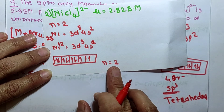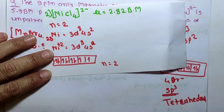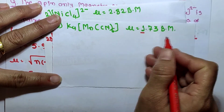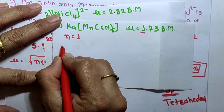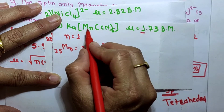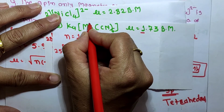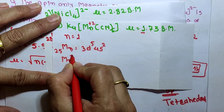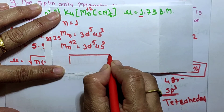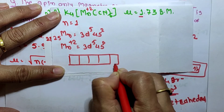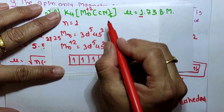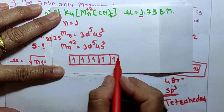Without drawing the orbital diagram, we can easily find the number of unpaired electrons from the spin magnetic moment. Next: K₄[Mn(CN)₆] has spin magnetic moment 1.73 BM, meaning 1 unpaired electron, so n = 1. To verify: Mn has atomic number 25, configuration 3d⁵ 4s². Oxidation state of Mn is 6 minus 4 = +2, so Mn²⁺ has configuration 3d⁵ 4s⁰. CN⁻ is a strong field ligand and can cause pairing.